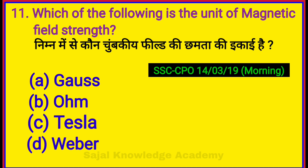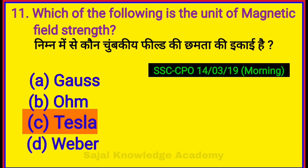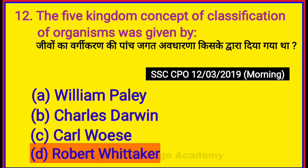Which of the following is the unit of magnetic field strength? Option C: Tesla. The five kingdom concept of classification of organisms was given by? Option D: Robert Whittaker.